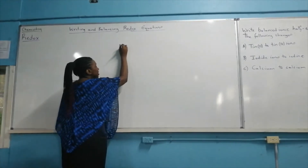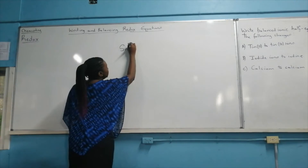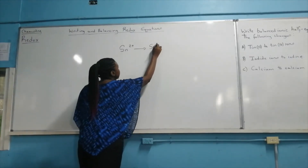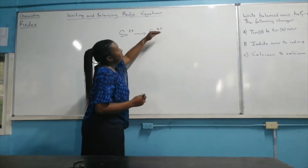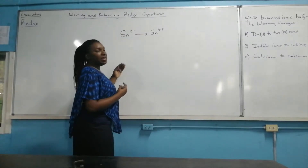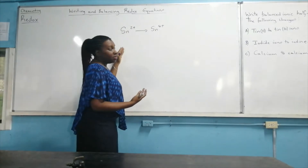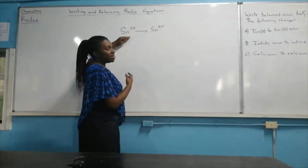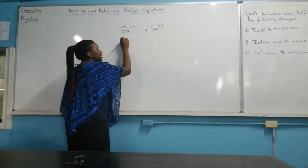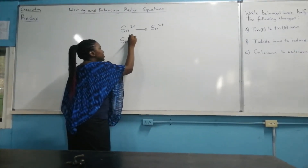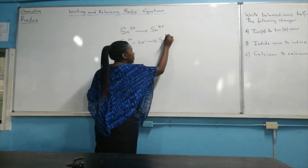If we're converting tin 2 to tin 4 — so that's Sn²⁺ to Sn⁴⁺ — it shows that there's an increase in the positive charges. If there's going to be an increase in positive charges, it means the electrons will have to be lost. So the tin would be losing electrons to increase the positive charge. We can represent it as: Sn²⁺ will lose two electrons to form Sn⁴⁺.